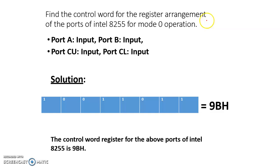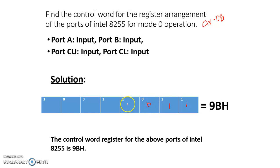The addresses are: control word register address is DB, D8 for port A, D9 for port B, DA for port C, and DB for the control word register. All the ports are input: port C lower input, port B input, mode 0 operation for port B, port C upper input, port A input, mode 0 operation — and accordingly the MSB is one.